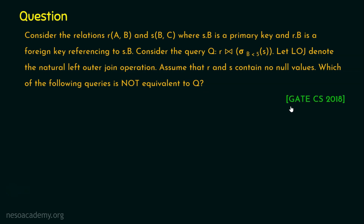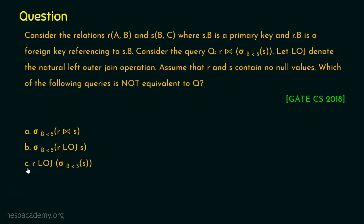This question was asked in GATE Computer Science in the year 2018. The options are: Option A — sigma with predicate B less than 5 from R natural join S. Option B — sigma with predicate B less than 5 from R left outer join S. Option C — R left outer join with the output of sigma with predicate B less than 5 from relation S. Option D — sigma with predicate B less than 5 from relation R, and this output relation left outer join S.